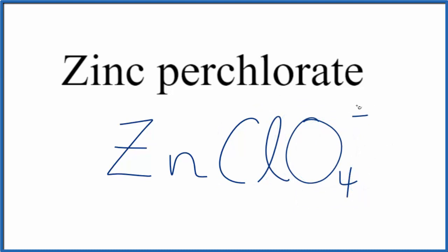So we know that the perchlorate ion, the whole thing, has an ionic charge of 1 minus. Zinc, although it's a transition metal, is almost always 2 plus.